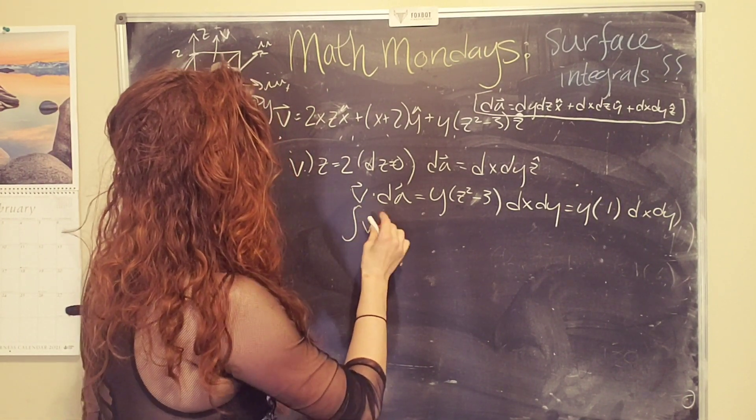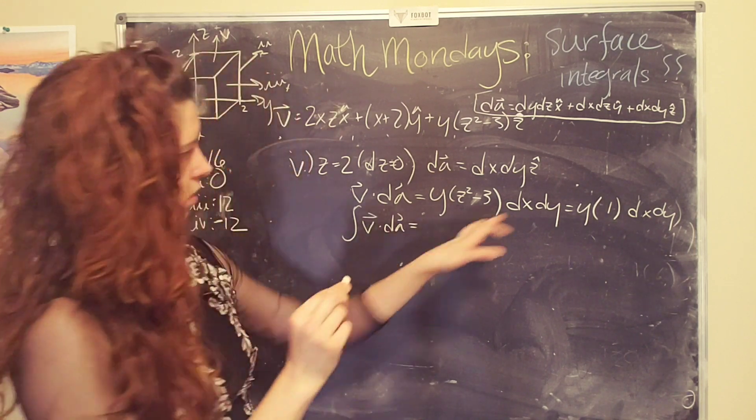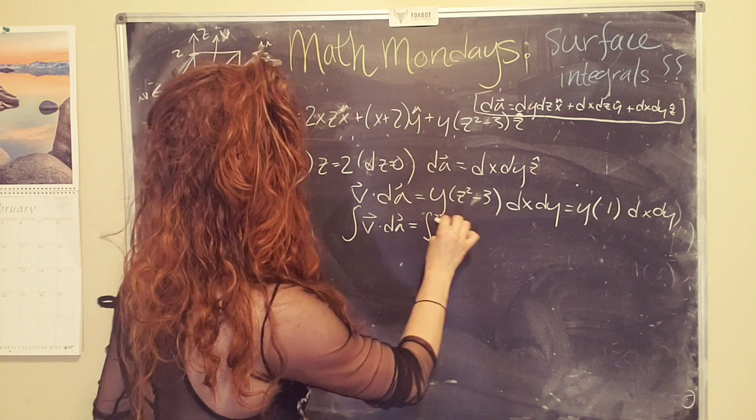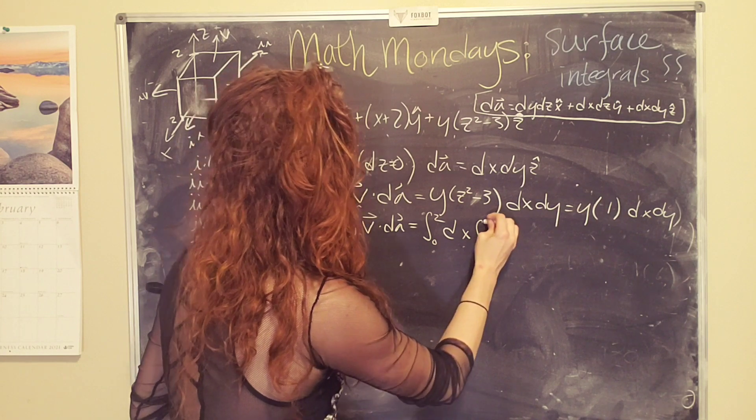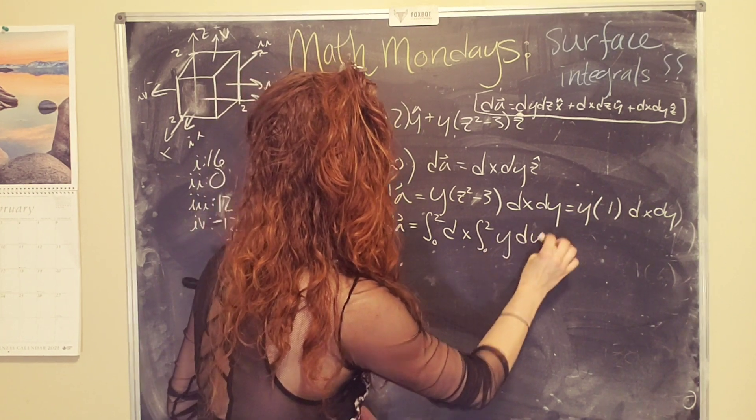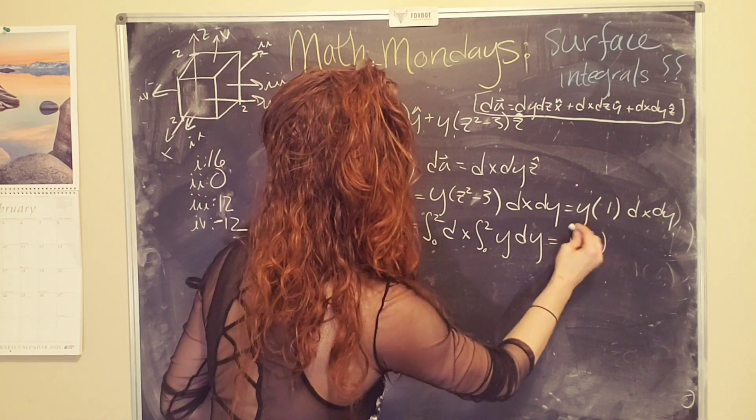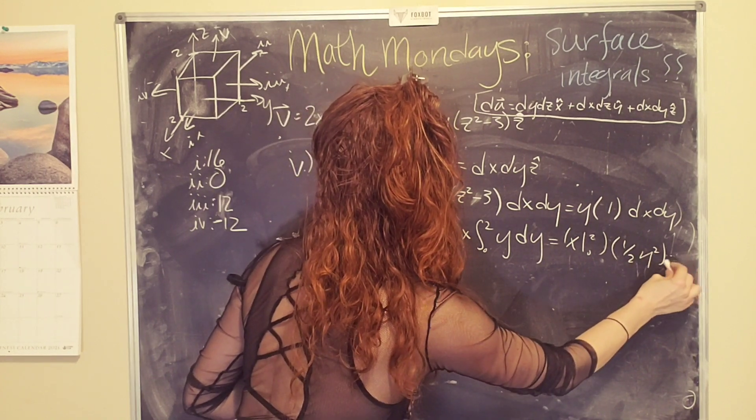That's an integral, not a j. Not v dot dA equals, we have, the integral from zero to two of dx. And then we have the integral y goes from zero to two also, nothing changed in there, of y dy.